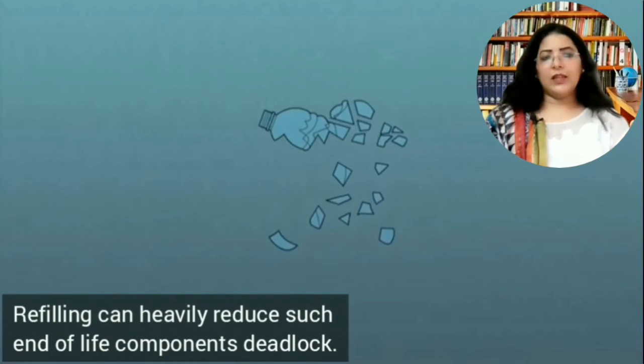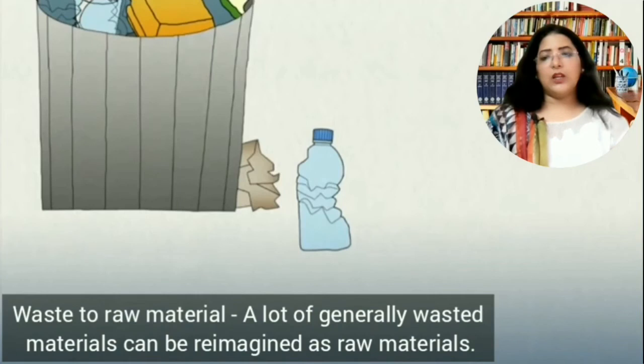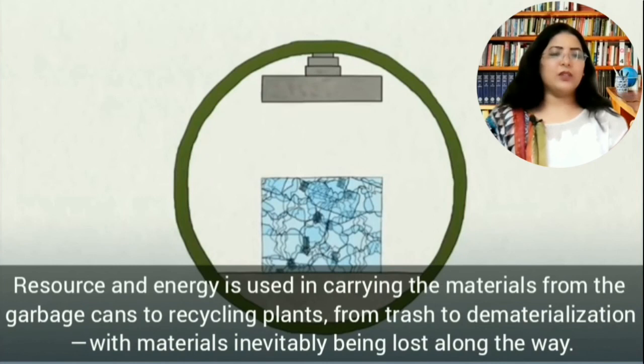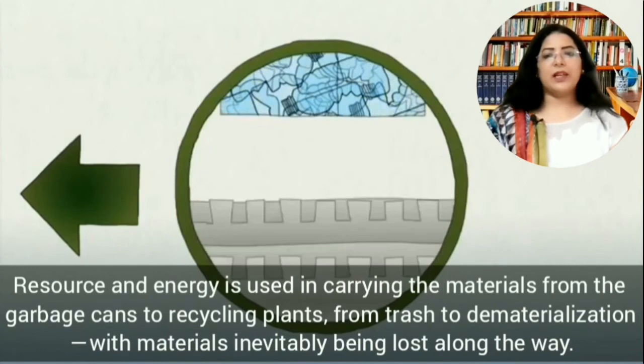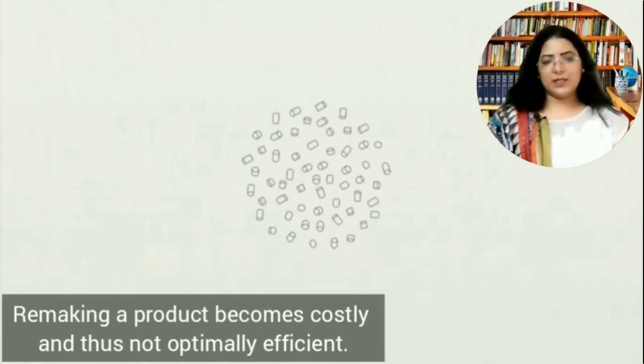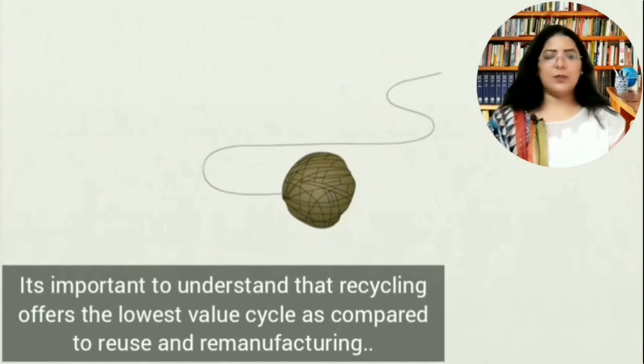Refilling can heavily reduce end-of-life component deadlock. Waste to raw material: a lot of generally wasted material can be reimagined as raw material. Please note that cycling requires labor — resource and energy is used in carrying materials from garbage cans to recycling plants, with materials inevitably being lost along the way. Remaking a product becomes costly and thus not optimally efficient. It's important to understand that recycling offers the lowest value cycle as compared to reuse and remanufacture.